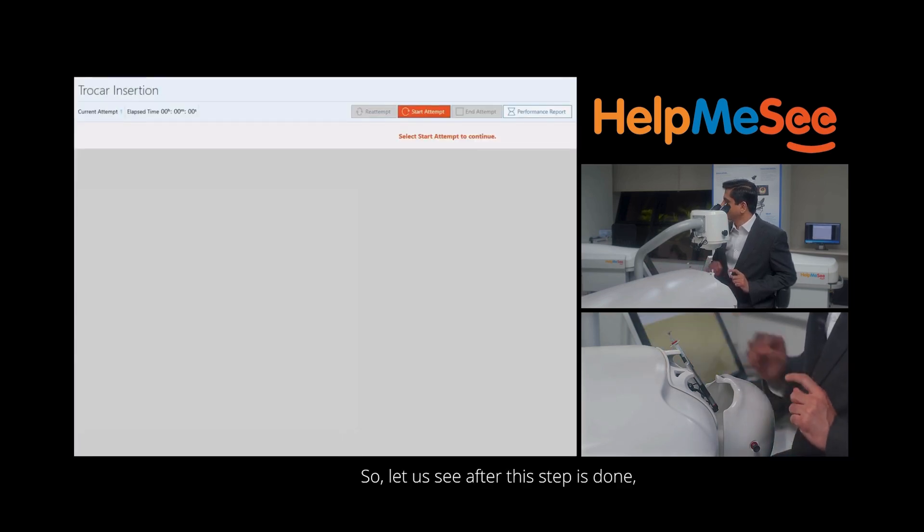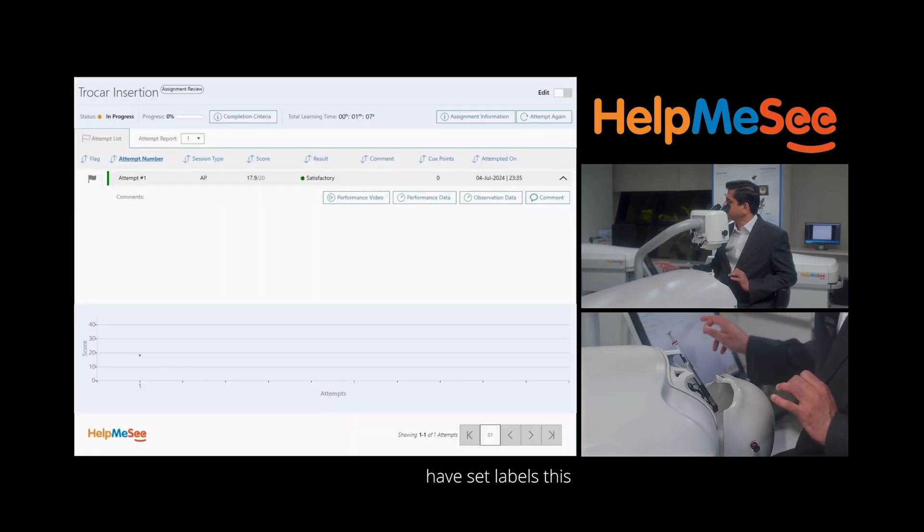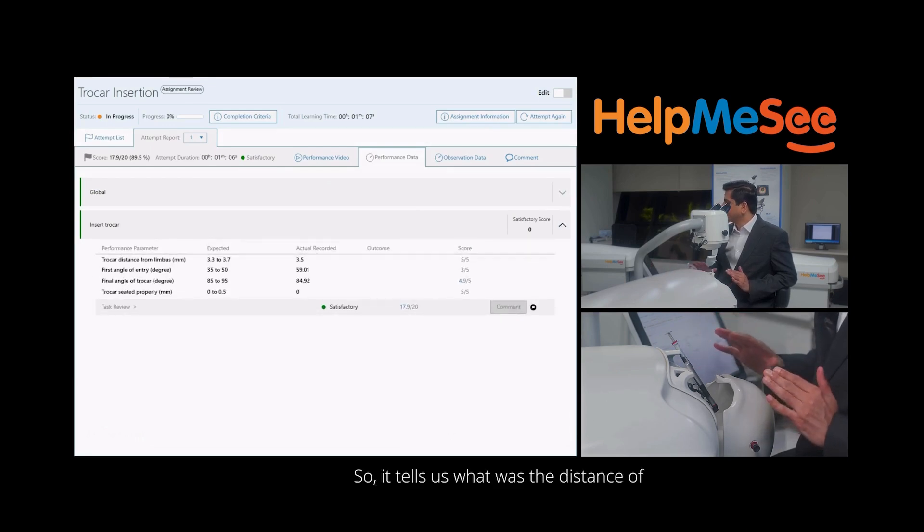After this step is done, the performance data will indicate how well we have done this step. It will label this step as being satisfactory or unsatisfactory based on the criteria that we have set. It tells us the distance of the trocar from the limbus, the first angle of entry, the second angle of entry, and whether the trocar was seated completely perfectly on the sclera.